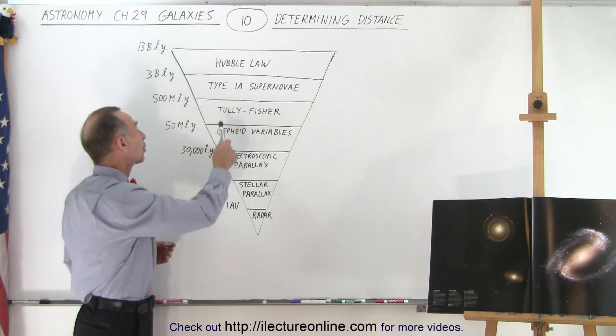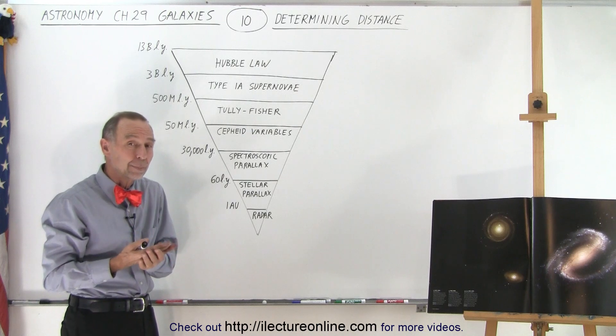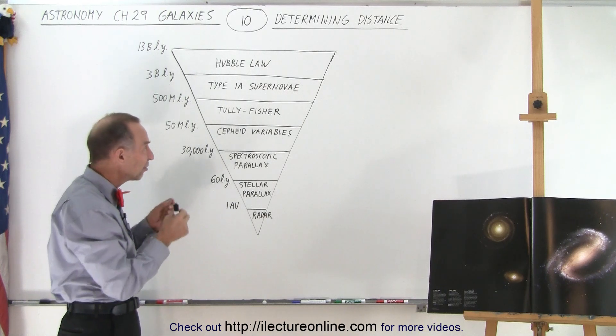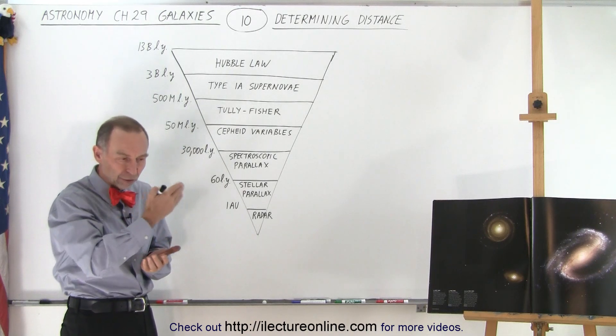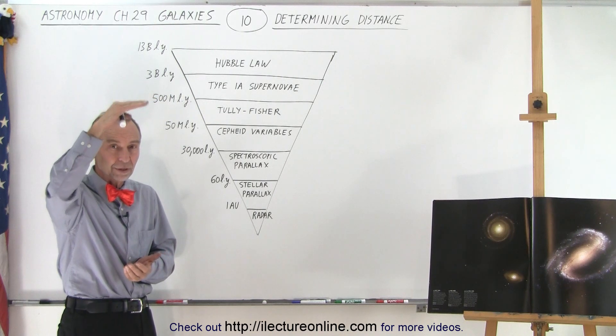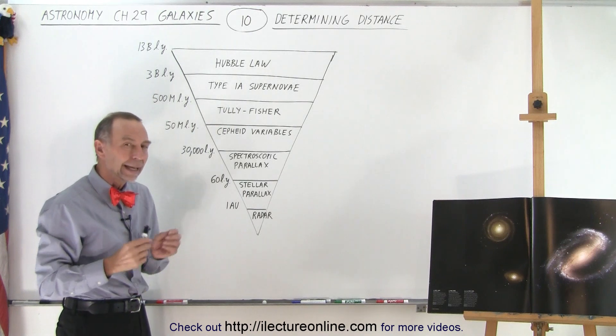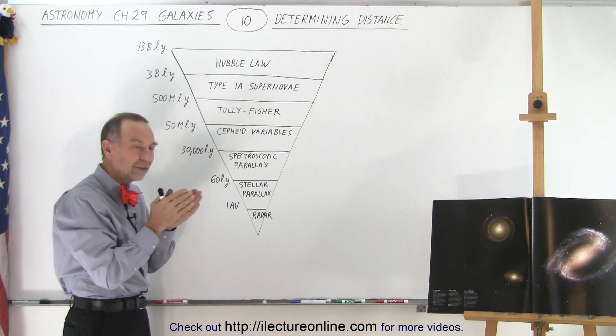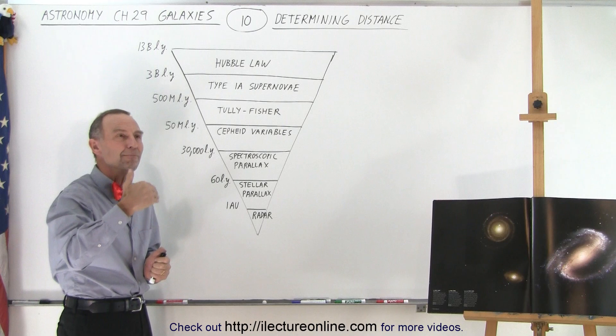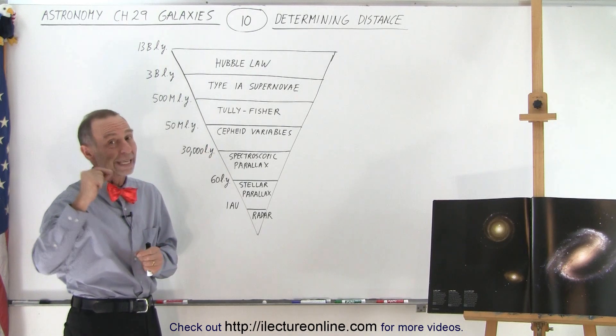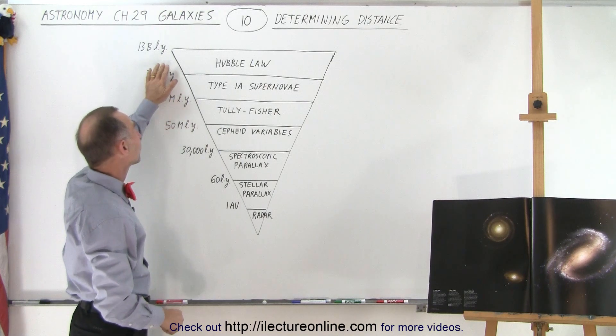The next method is the Type 1a supernova. The absolute magnitude of Type 1a supernovae is about minus 19, and since all of them have about the same brightness when they explode, all we have to do is measure their brightness. We watch the light intensity curve increase, then decrease, catching it at the very top by watching night after night. We measure the apparent brightness, knowing the absolute brightness at the peak, compare the two, and from that figure out the distance. And finally, we have the Hubble law.